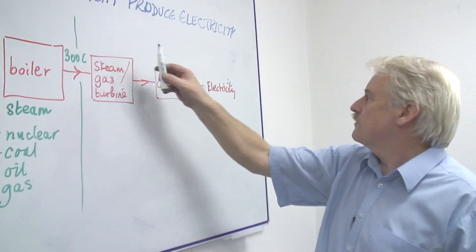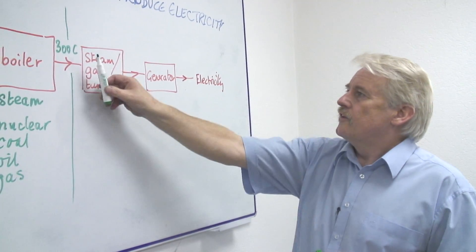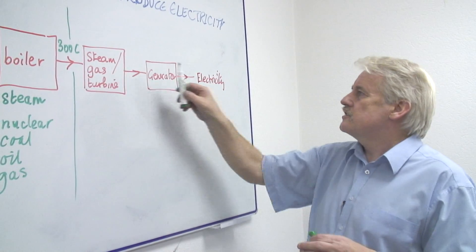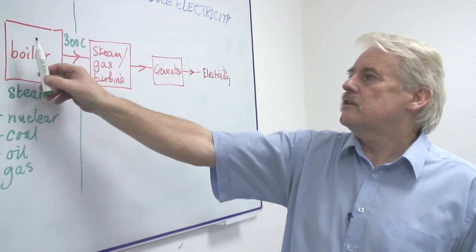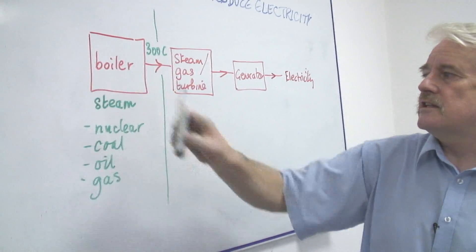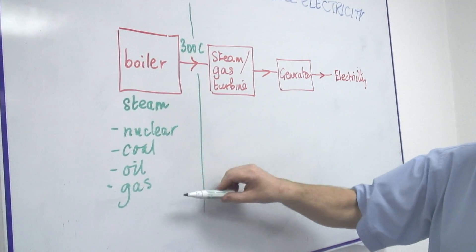It doesn't matter what kind of power station you have, the last three stages of this process are all the same. It is only the boiler, the heat producing device which is different and uses different fuels.